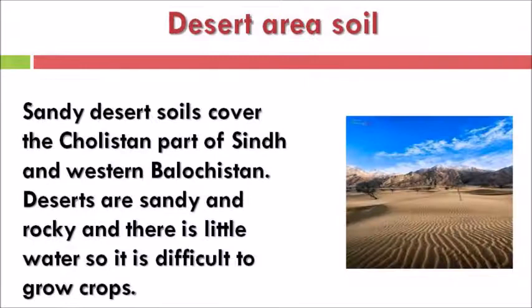Desert area soil. Sandy desert soils cover the Thar part of Sindh, western Balochistan, and some parts of Punjab. Deserts are sandy and rocky and there is little water, so it is difficult to grow crops. Basically, deserts have sandy soil with no fertile soil, making it very difficult to grow plants.